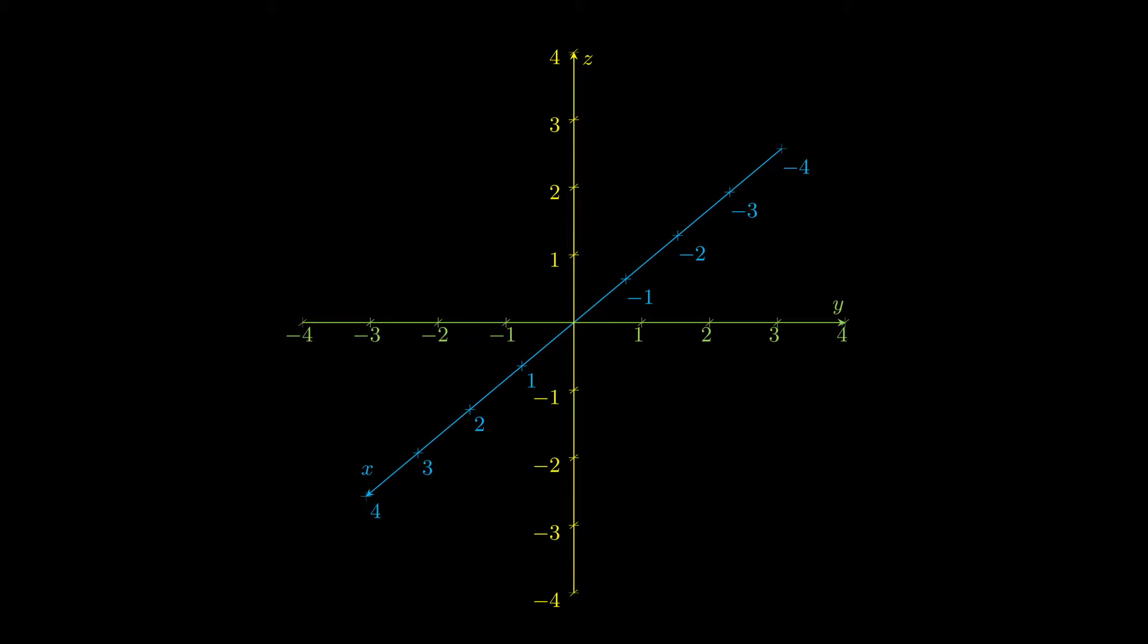So what you want to imagine when you draw things like this is that the blue axis is coming out of the screen and into the screen, or if you're drawing this by hand, out of the page and into the page. And we'll often use the x axis as the one going out and into the page, the y axis will often be the one going across, and the z axis will very often be the one going up and down.